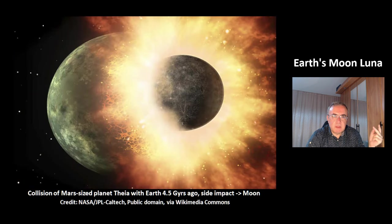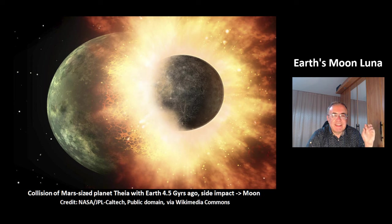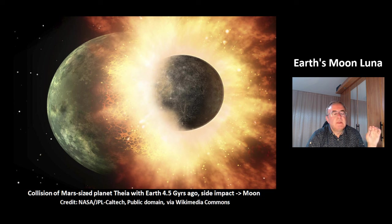The answer is that the system was formed by a collision with a Mars-sized planet called Theia, with Earth 4.5 billion years ago. This was a site impact, which added mass to planet Earth, and from the debris the Moon was formed.